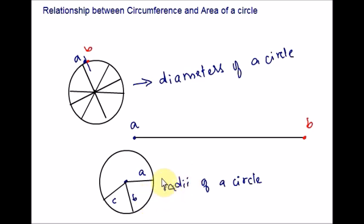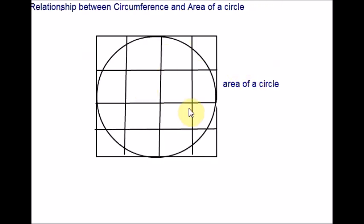The area of a circle is the total number of square units that fill the circle. Please look at this figure — the area of this circle is 13 units. Note that we count the fractional units inside the circle as well as whole units.